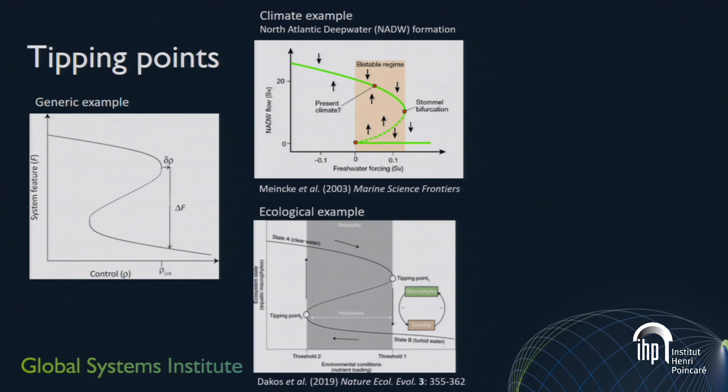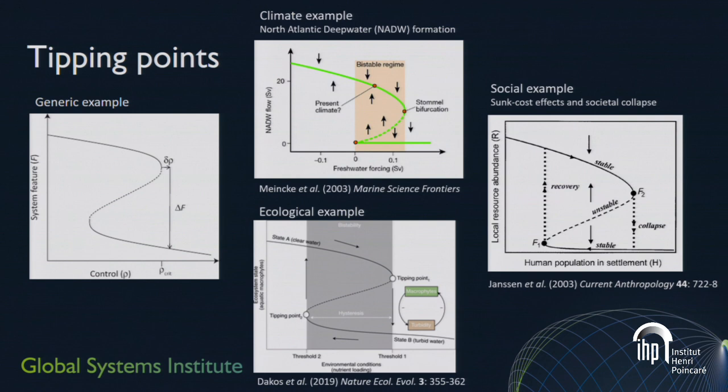In ecology, there's wide recognition of this kind of dynamics — for example, in the tipping of shallow or deeper lakes between clear water and eutrophic states. In the analysis of past societal collapses, there's also some suggestion that tipping dynamics are present. In simple terms, this is thought to be generic behaviour across a range of complex systems. And there might be couplings between tipping events in the climate and in other ecosystems.